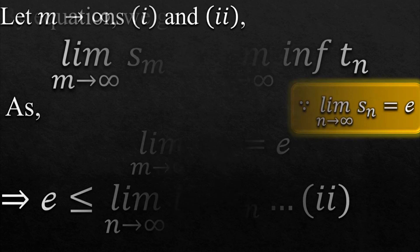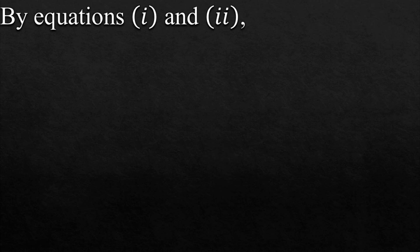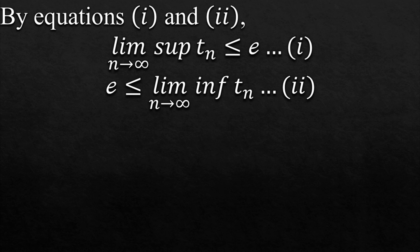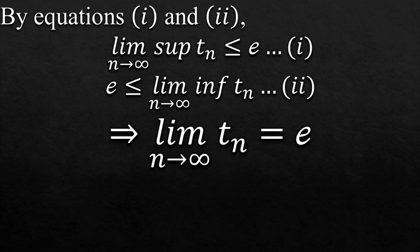Alright, moving on to the last step of this very lengthy theorem. We compare equation number 1 and 2. Hey, look! By equation number 1, e is greater than or equal to the supremum of Tn. And by equation number 2, we can see it is also less than or equal to the infimum of Tn. How is that possible? So this means that e is basically only equal to lim Tn.